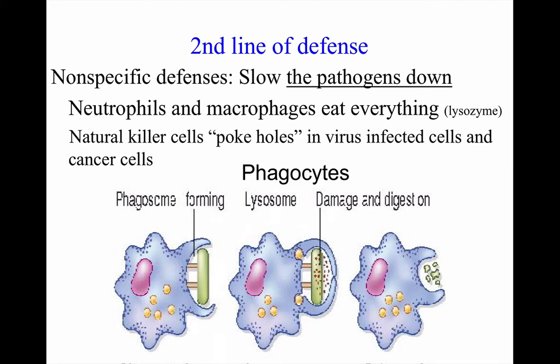Then you have natural killer cells. If a virus has already infected a cell, you want to slow it down and stop it from spreading from cell to cell. Natural killer cells find cells of your own body that have been infected and kill those cells to prevent the virus from spreading. Natural killer cells also look for cancer cells — cells of your own body that have become cancerous — and destroy them.